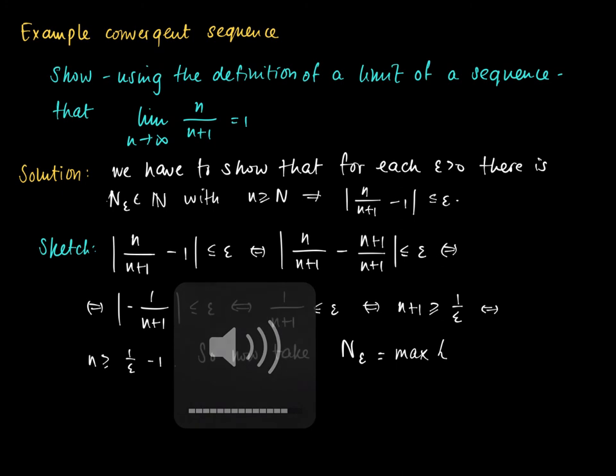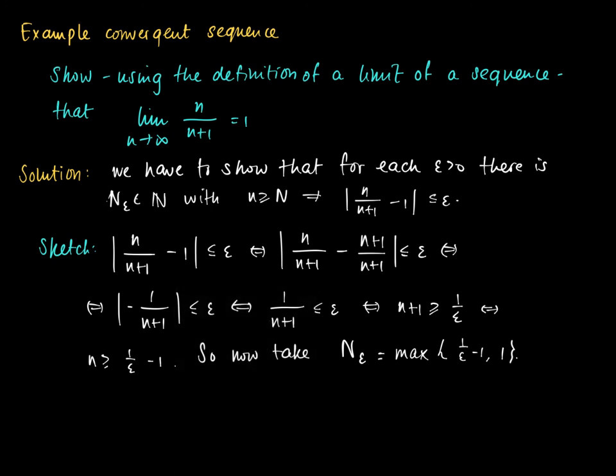And the maximum with 1, because the ceiling of 1 over epsilon minus 1 may still be smaller than 1. Since the sequence starts off with the value 1, we should take a maximum with 1 to ensure that N epsilon is a natural number.